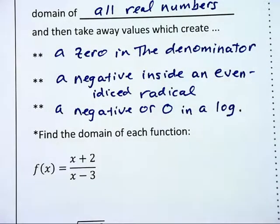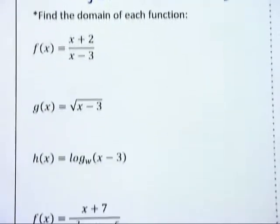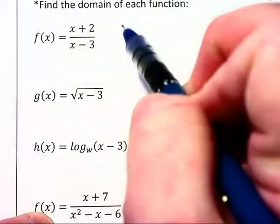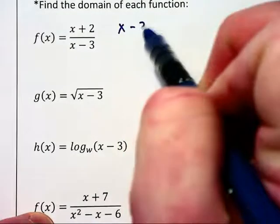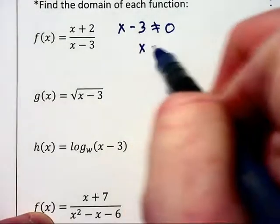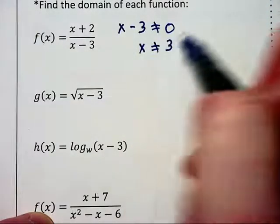Now, let's take a look at a few different examples. In this first case, we have x minus 3 in the denominator, and we need to ensure that x minus 3 is not equal to zero. Therefore, x cannot equal 3.